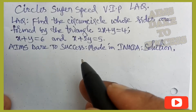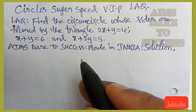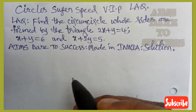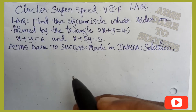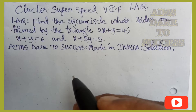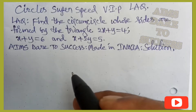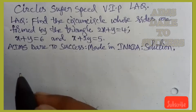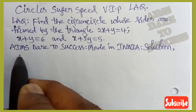Hi, hello, namaste my dear students and friends, welcome to Aim's Dare to Success Made in India YouTube channel. Today I wanted to discuss with you circles super speed VIP very important previous long answer question. The question is: find the equation of the circumcircle whose sides are formed by the triangle 2x+y=4, x+y=6, and x+2y=5.